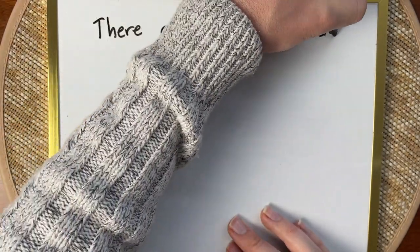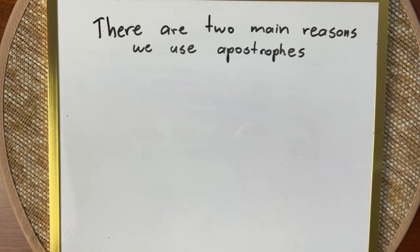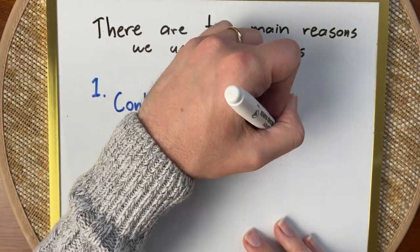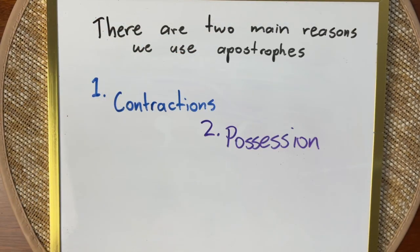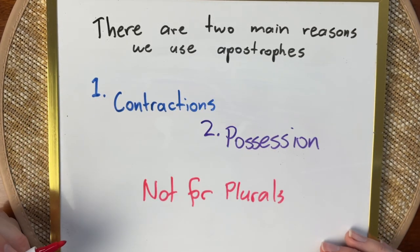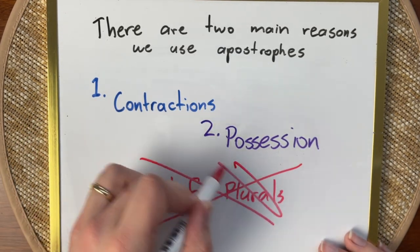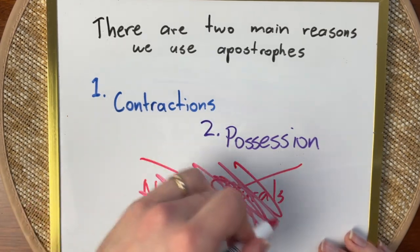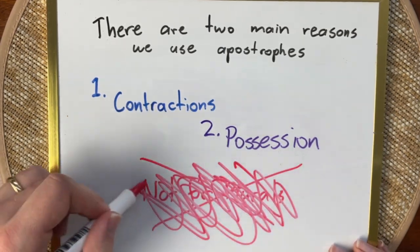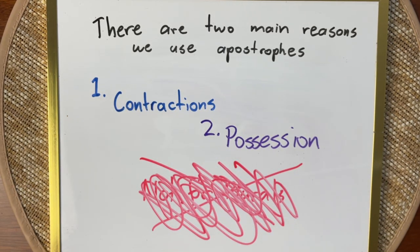There are two main reasons we use apostrophes: they are for contractions and to show possession. But do you notice how none of those reasons are for plurals or for multiples of things? We don't use apostrophes for plurals. I'll share some other things that are often mistaken for needing apostrophes later in the video.